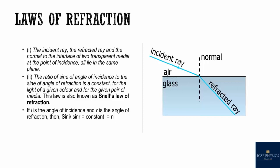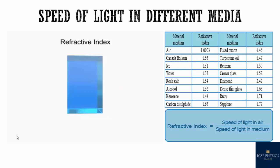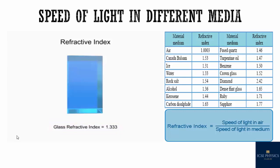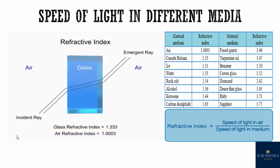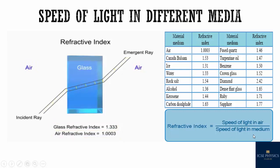The refractive index is represented by the English letter N or the Greek letter μ. The refractive index of a second medium with respect to the first is defined as the ratio of the sine of the angle of incidence to the sine of the angle of refraction. All transparent mediums have different refractive indices — this is the speed that light travels in a medium compared to light traveling in a vacuum. For example, glass has a refractive index of 1.5, calculated by dividing the speed of light in vacuum by the speed of light in glass.